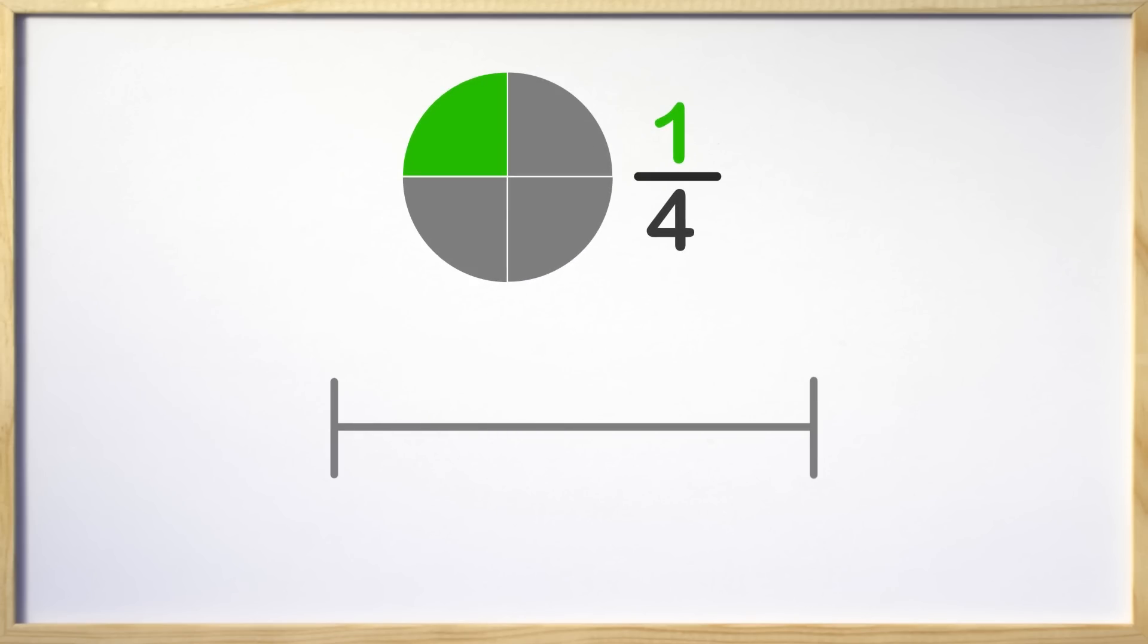Here is a number line. A number line is pretty easy to draw, and you will soon see that they can look a lot like a ruler or a tape measure. Up top we have the fraction we need to represent on the number line. We need to divide the line into the correct number of pieces. The denominator tells us the total amount of pieces.